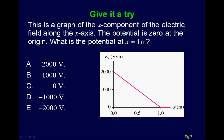Let's do an example. Here we have a graph of the X component of the electric field along the X axis. The potential is zero at the origin. What is the potential at one meter? Pause this, work through it, and see what you come up with. Hopefully you got negative 1,000. If not, let's walk through it. Our equation is V final equals V initial minus the area under the curve.